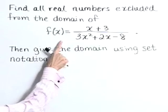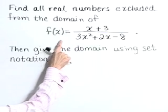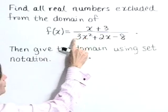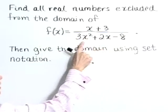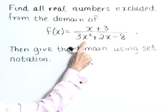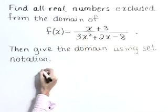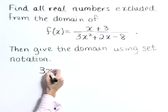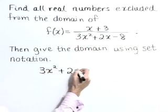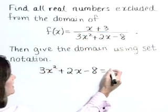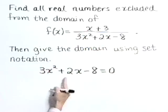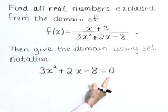Now, with this rational function, we must exclude numbers that are going to cause this denominator to be 0 because division by 0 is undefined. So let's start by setting that denominator, 3x squared plus 2x minus 8, equal to 0, and then finding the x values that cause this.